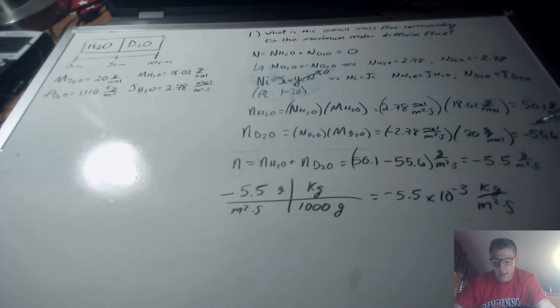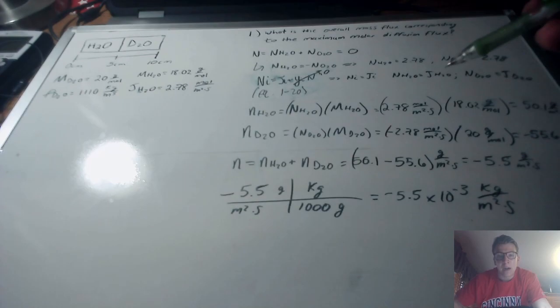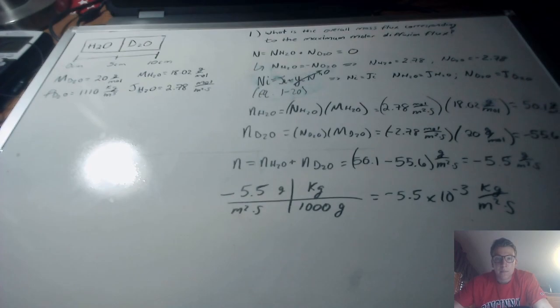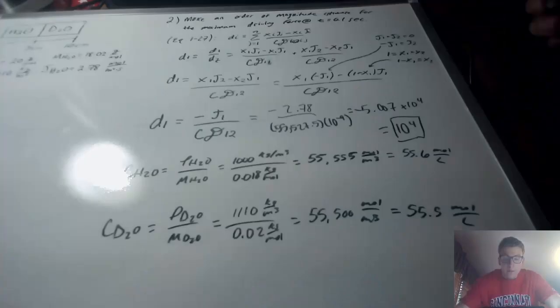Converting from grams to kilograms by dividing by 1000, we get negative 5.5 times 10 to the negative third kilograms per meter squared per second, which is our overall mass flux corresponding to the maximum molar diffusion flux.